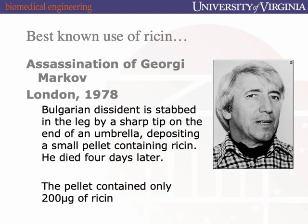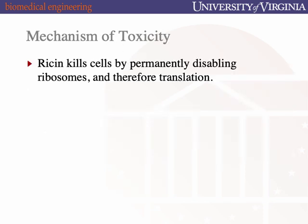Two hundred micrograms of ricin. More recently — October 2018 — a man was jailed for sending President Trump and General Jim Mattis castor beans in the mail, linked to ricin poisoning. Ricin kills by messing up, in a very potent way, the core translational processes of cells.